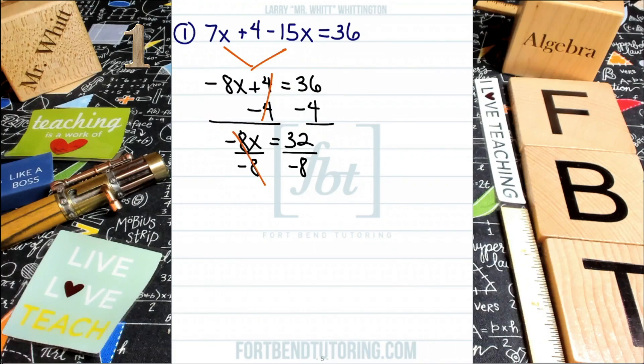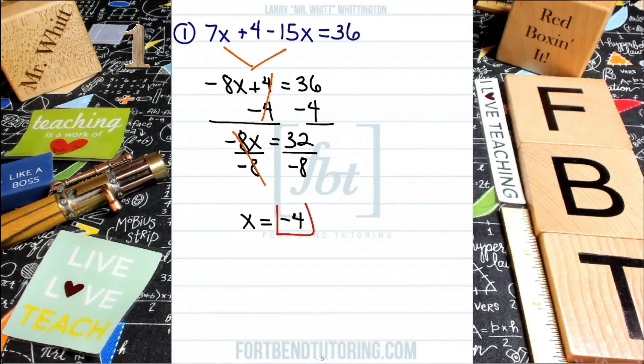Go ahead and bring down the variable x. Now it is isolated. You have a positive 1x to the first power, which is exactly what we wanted. And on the right side of the equation, a positive 32 and a negative 8, when we are dividing those values, you'll end up with a negative 4 as a result. Red box it, people. Just like that. That's example 1.